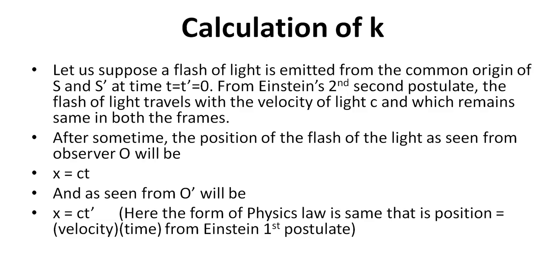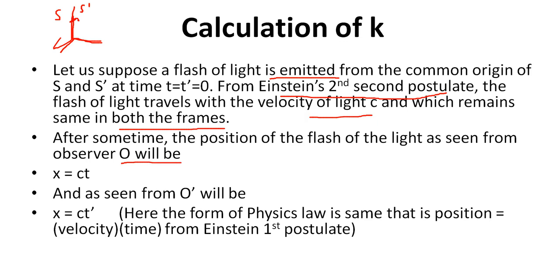Now let us calculate the constant k. Suppose a flash of light is emitted from the common origin of S and S' at time t equals t' equals 0, meaning when both frames are at the same position. From Einstein's second postulate, the flash of light travels with velocity c, which remains the same in both frames in free space. After some time, the position of the flash as seen from observer O will be x equals ct.